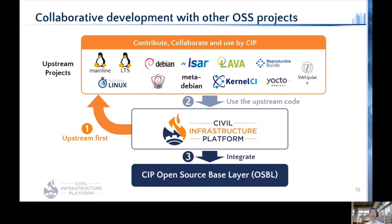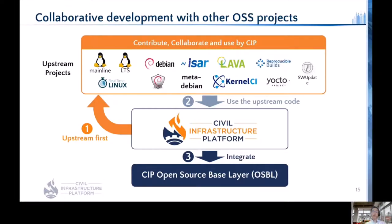The upstream-first principle is essential to achieve industrial requirements, especially in terms of long-term maintenance. We collaborate with upstream projects before using their outputs — we upstream what we have and don't keep things locally. By upstreaming, our code is incorporated into the upstream codebase, and by using upstream code we can take advantage of upstream activities with our code.